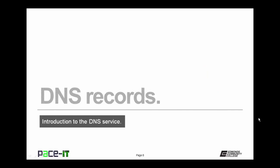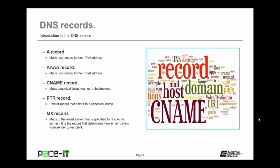Now let's move on to the various DNS record types. The first record is the A record — it maps host names or FQDNs to their respective IPv4 addresses. Closely associated is the AAAA record, or quad-A record, which maps the FQDN to its respective IPv6 address. Then there's the CNAME record, which maps a canonical name or alias to a host name.